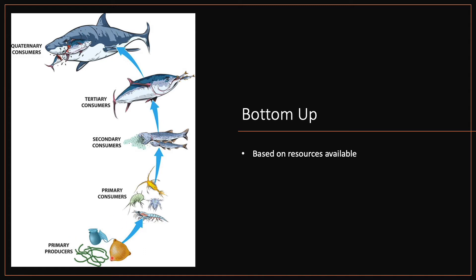It starts with the primary producer — in this case, the plant — and that primary producer dictates what happens higher up the chain. If it is limited, it affects everything above. That's why it's called bottom-up: it starts from the bottom and works upward, based on resource availability.